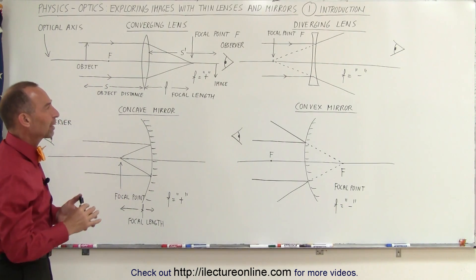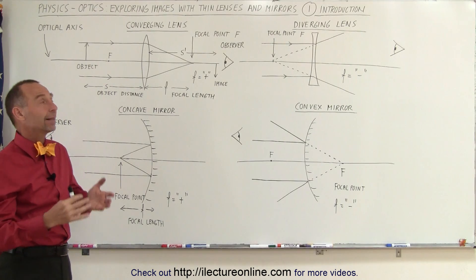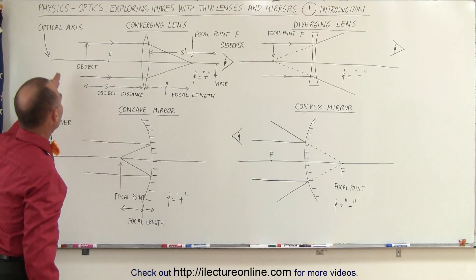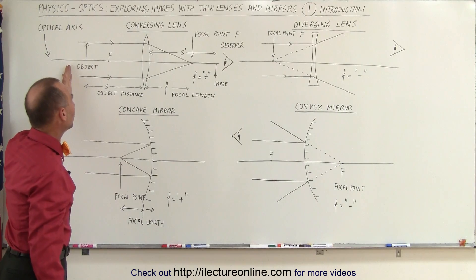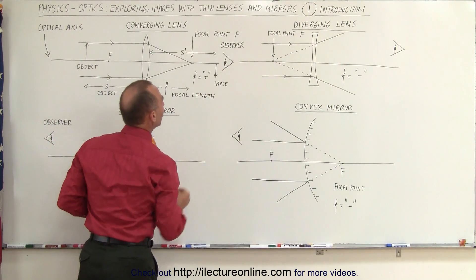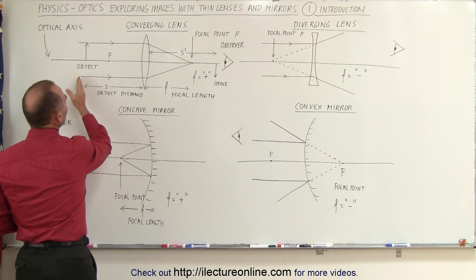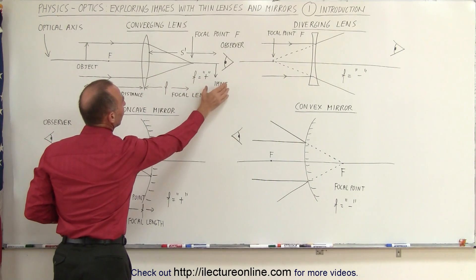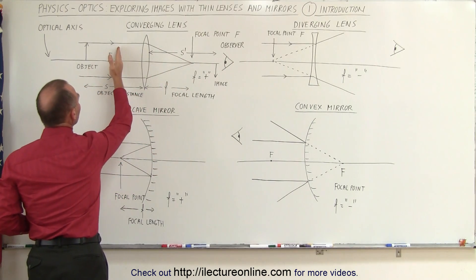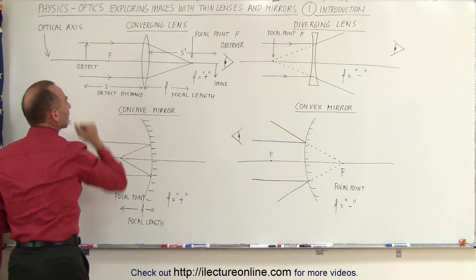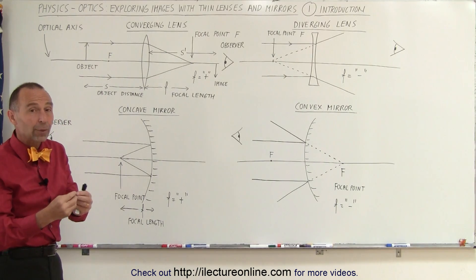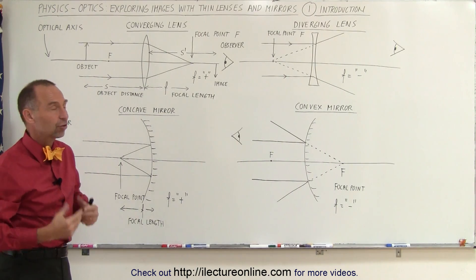What are some of the key aspects we have to know about lenses? Well, first of all, typically we place the object to the left of the lens and the observer tends to be to the right of the lens. If an image is formed on the other side of the lens, we call that a real image. If an image is formed on the same side of the lens as the object, we call that a virtual image — it's not really there, it just appears to be there.